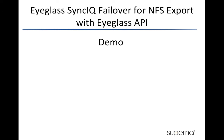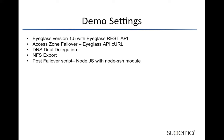The objective of this demo is to demonstrate the eyeglass for Isilon SyncIQ failover for NFS export by utilizing the Superna eyeglass API and eyeglass Pulse failover script. In this short demo, we are using eyeglass version 1.5 that includes the eyeglass REST API feature. The SyncIQ failover is managed through the eyeglass AccessZone failover and initiated by using the eyeglass API cURL commands. DNS dual delegation is configured to handle name resolution for failover and failback. A Node.js script is created and enabled as the Pulse failover script to unmount and remount the NFS mount on the client side.